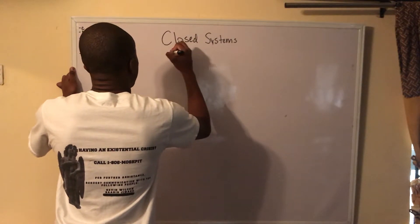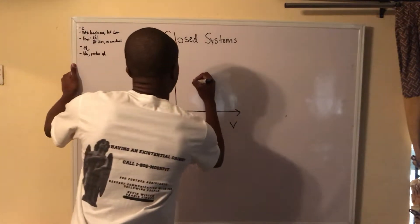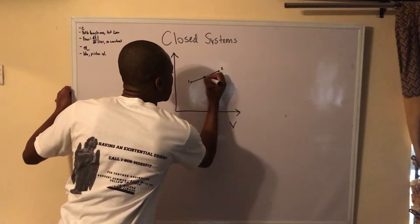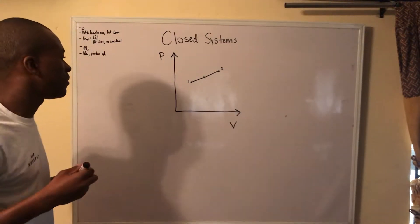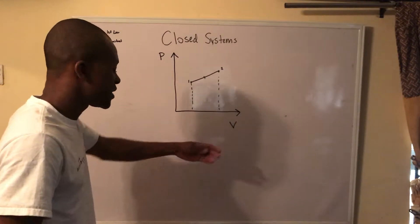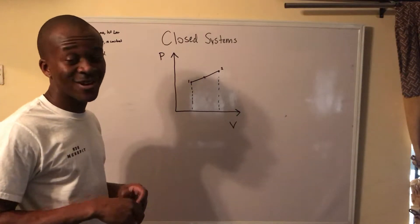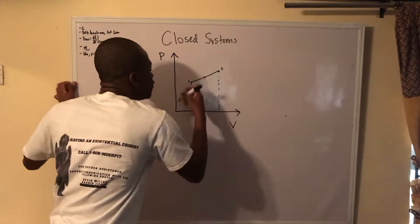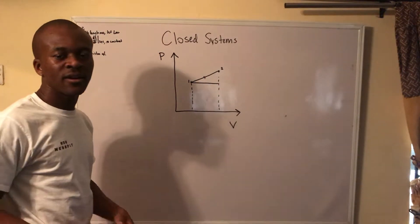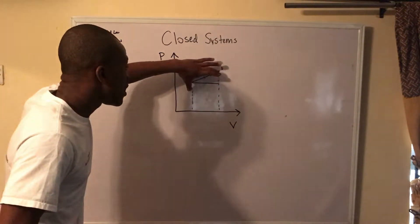Now let's talk about boundary work. On a PV diagram, say I have a process going from point 1 to point 2 along some curve. The work of the system can be found simply by finding the area under the curve — that's the amount of work done by the system. We call it boundary work because it's a closed system. If you don't know the formula for an irregular shape, you can divide it into a triangle and a rectangle. The boundary work is just the area under the curve.